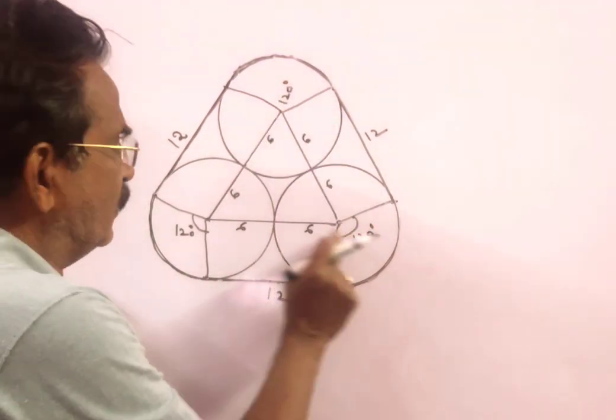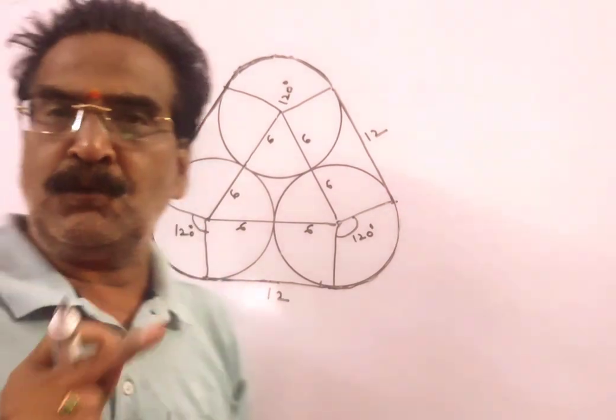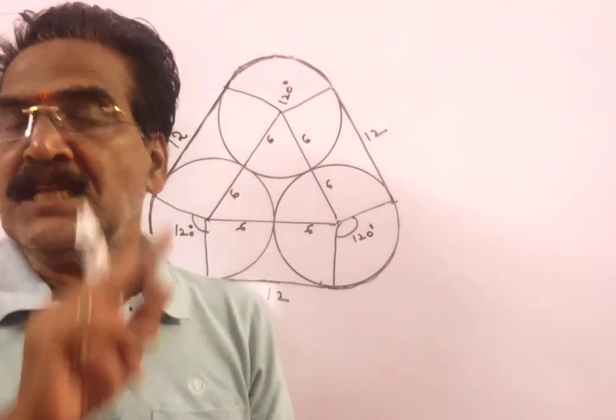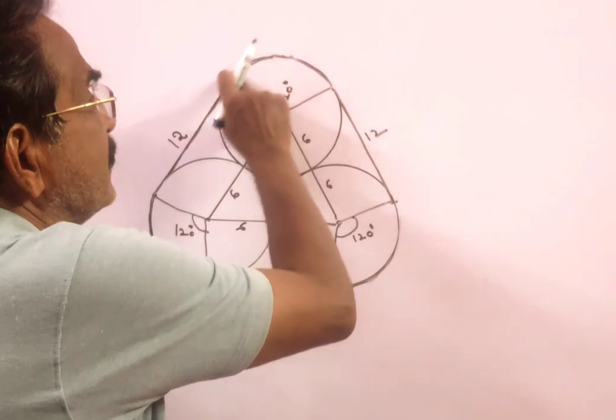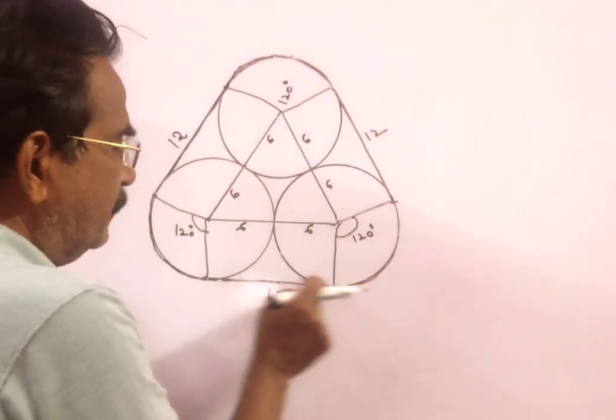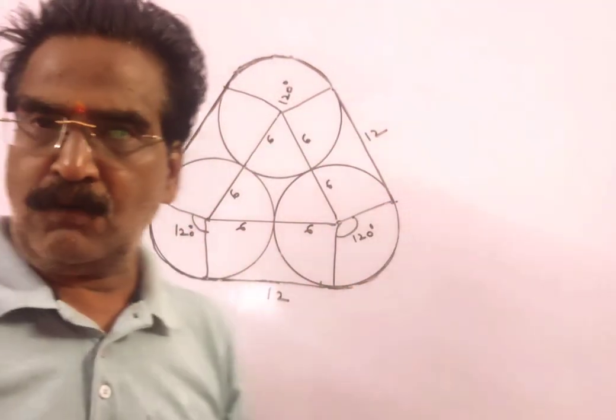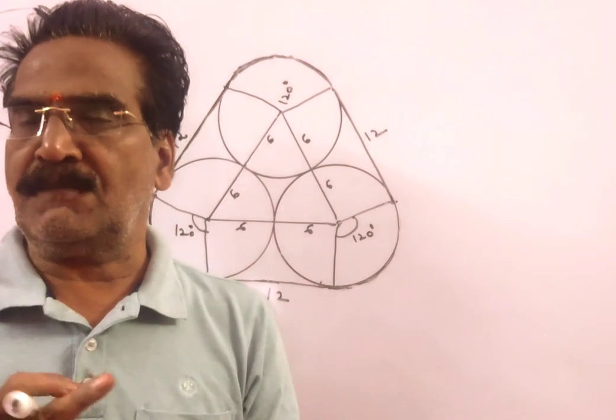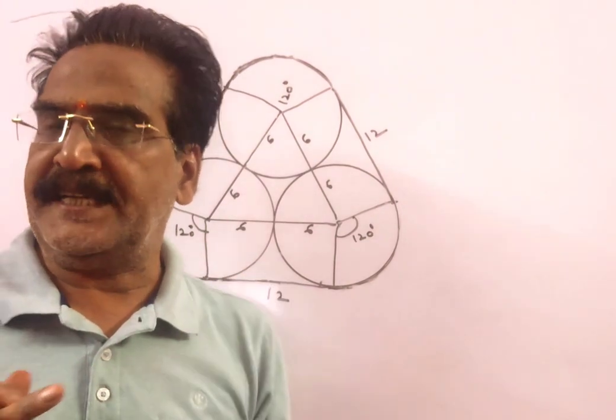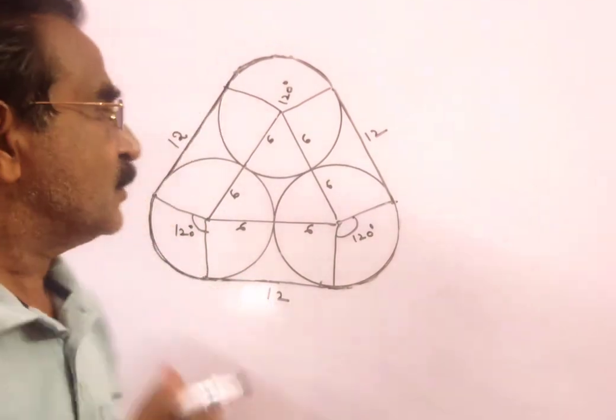Friends, this is 120, this is 120, this is 120. So 120 is 360. So the lengths of this length plus this length plus this length is equal to the circumference of the circle of radius 6 cm.